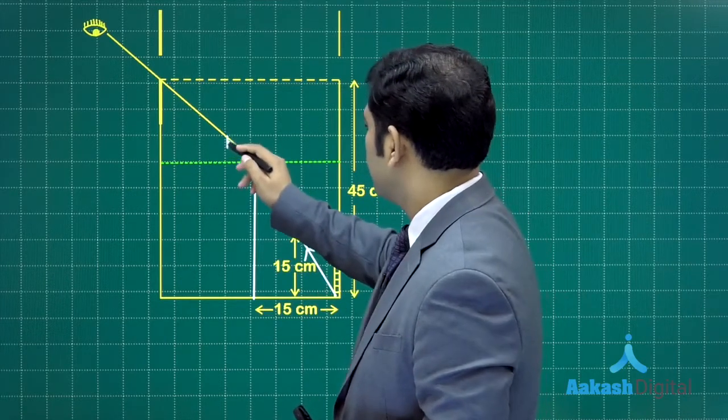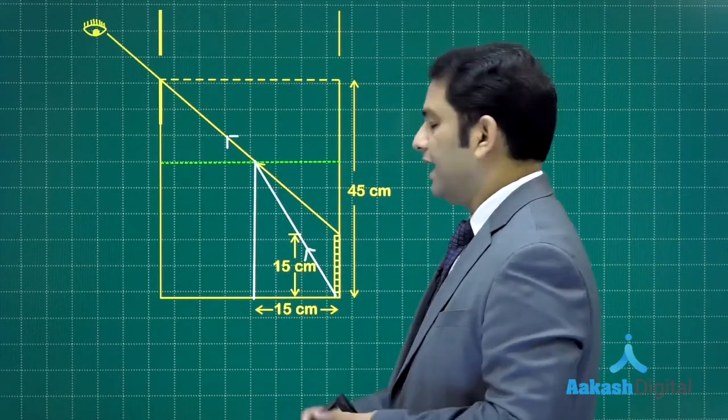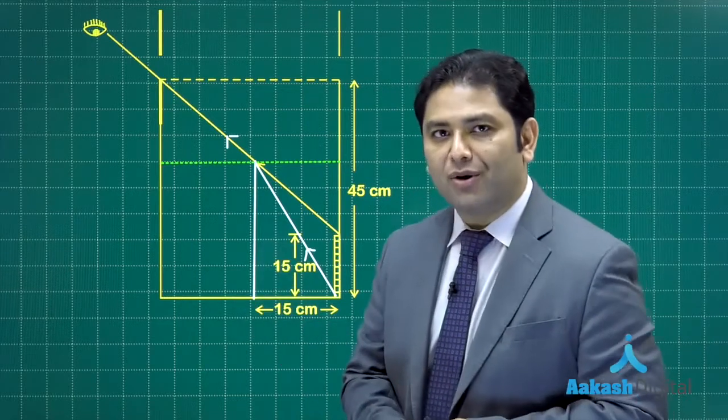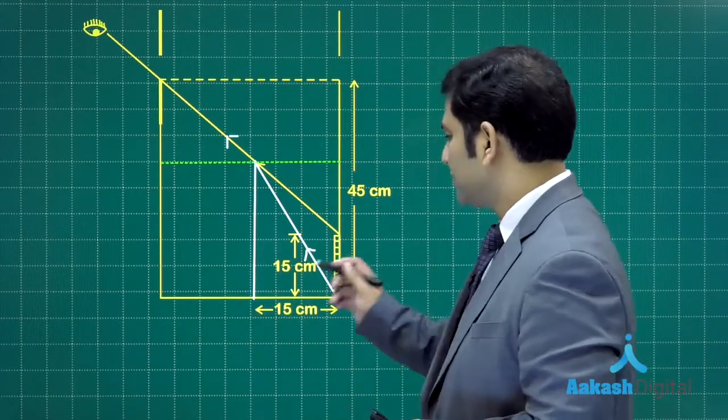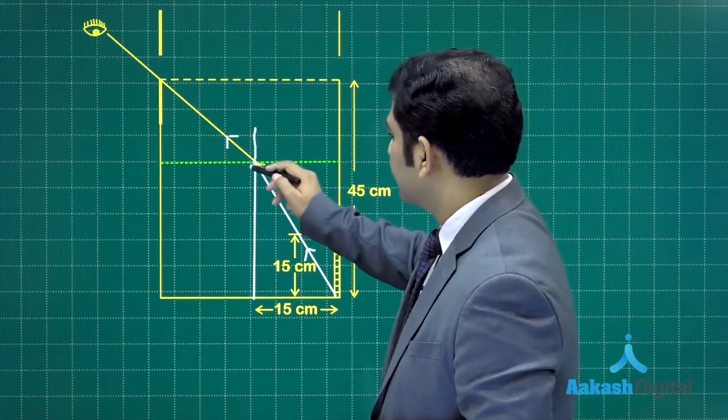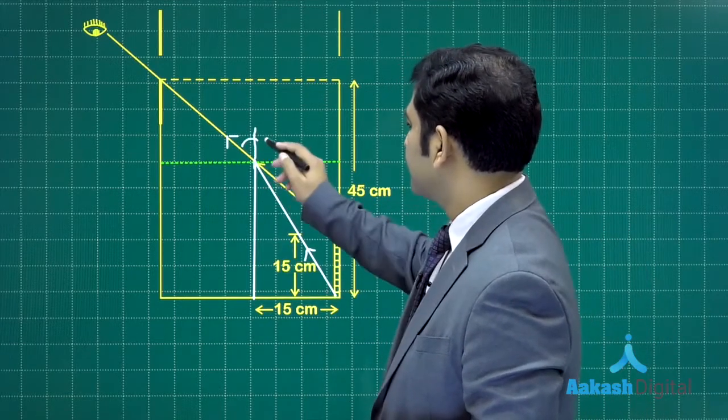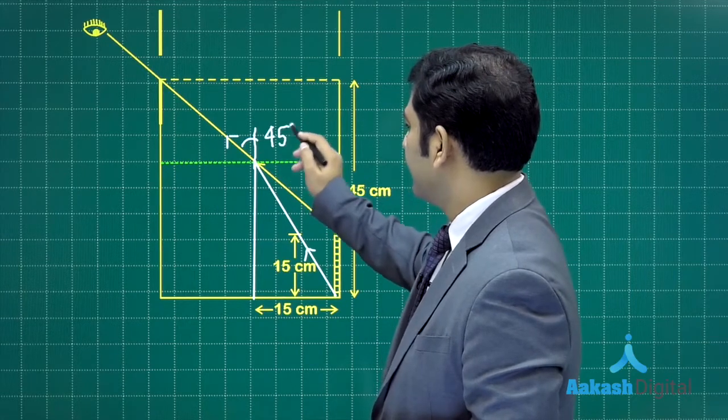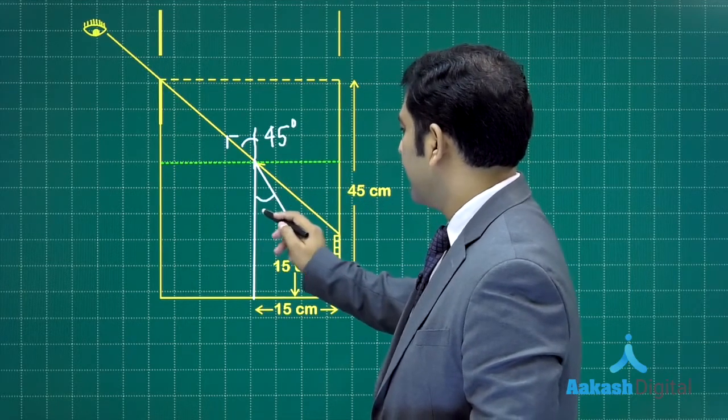That is how things will go, and that is the condition which will allow the observer to see the bottom of the edge. Needless to say, the angle of refraction would be 45 degrees, and here is the angle of incidence.